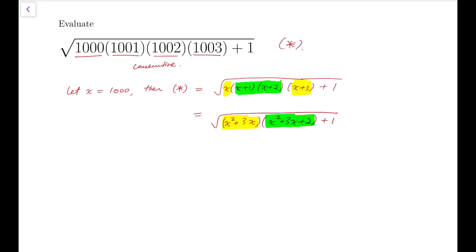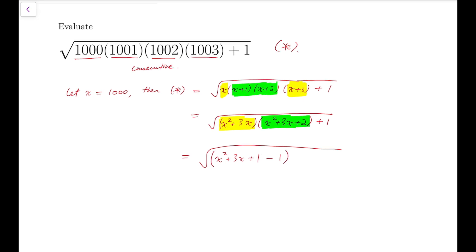Now, furthermore, notice that the yellow group and the green group differ by 2. So I can further rephrase that as this expression, x squared plus 3x plus 1. The yellow group is this expression minus 1, while the green group is this expression added by 1. So the green group is plus 1, and the yellow group is minus 1.